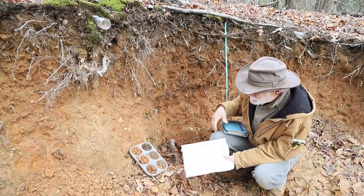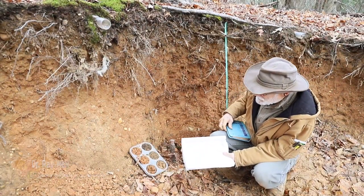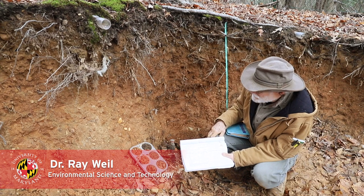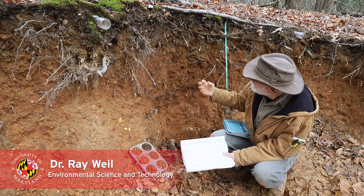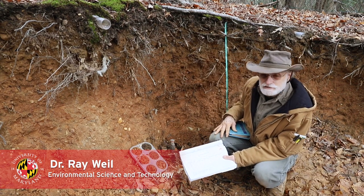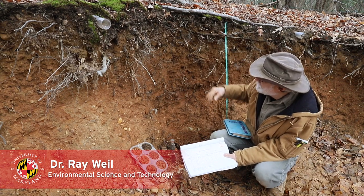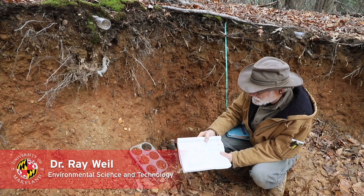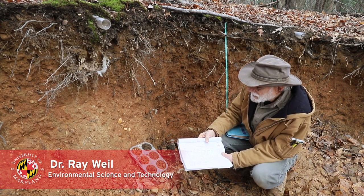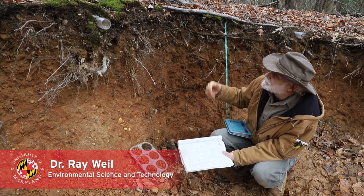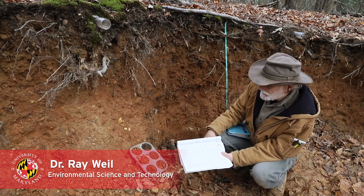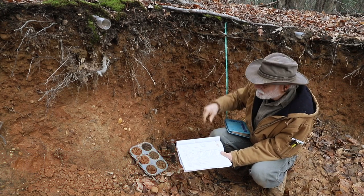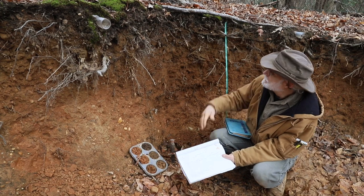We've talked a little bit about the texture, the particle size, how the soil feels and ribbons out, and the structure, how it holds together. These are all characteristics that distinguish the different horizons and help us define the soil and understand how it works. One of the things that's most useful in classifying soils — and also probably the most obvious — is the color.